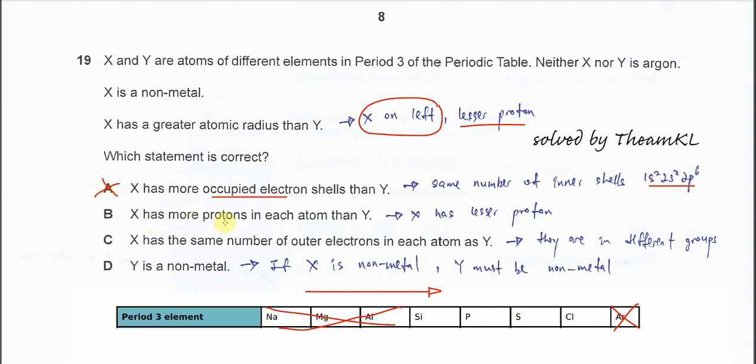Option B: X has more protons in each atom than Y. I already told you, X is on the left, so it has lesser protons. This one is also out.